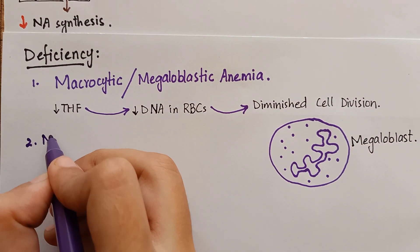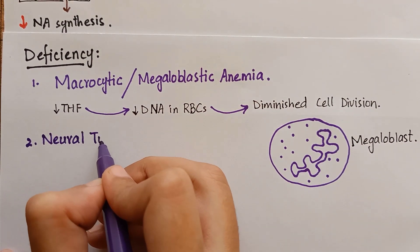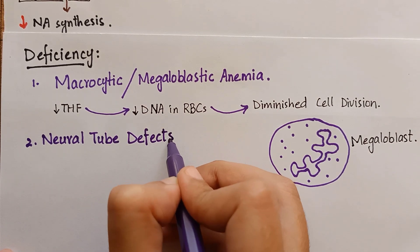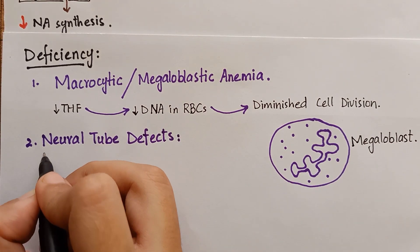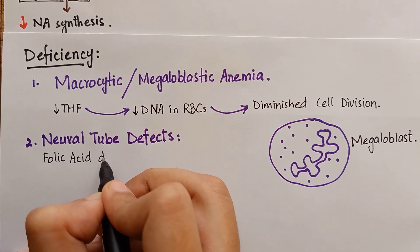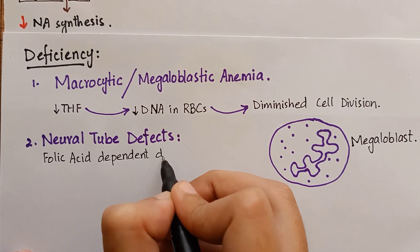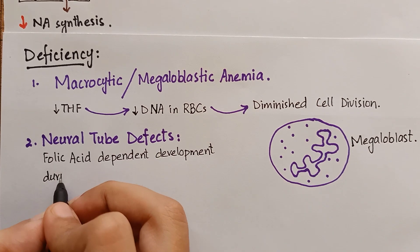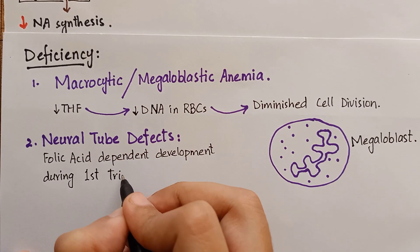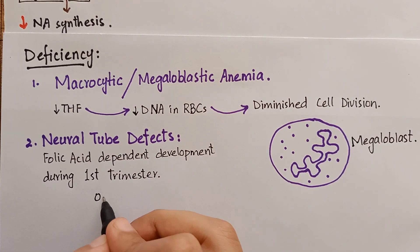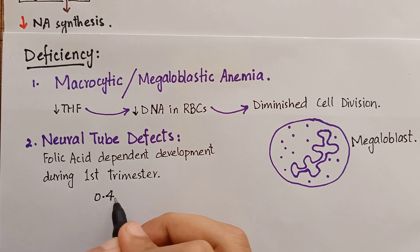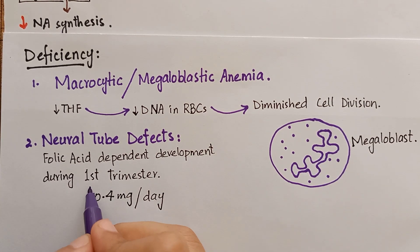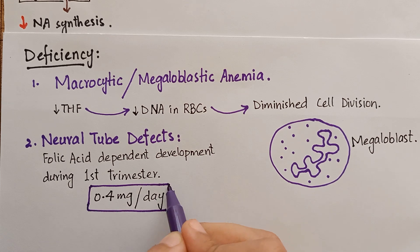Folic acid deficiency in pregnant women causes neural tube defects — for example, spina bifida and anencephaly — because folic acid-dependent development occurs in the first week of fetal life. Therefore, women of childbearing age are advised to take 0.4 mg per day of folic acid supplementation before conception and during the first trimester.